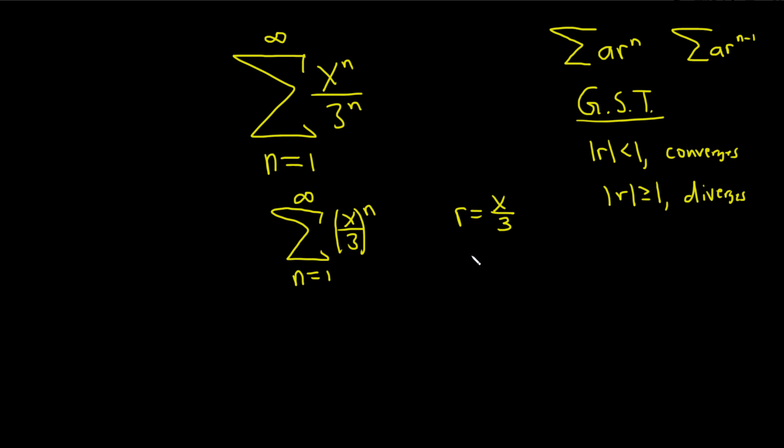So because we want convergence, we want this condition here. We want the absolute value of r to be less than 1. But what is r? It's x over 3. So the absolute value of x over 3 needs to be less than 1. Whenever you have the absolute value of a fraction like this, you can just take the absolute value of each piece. This is really the absolute value of x over the absolute value of 3. But the absolute value of 3 is just 3, so I'm just going to put a 3.